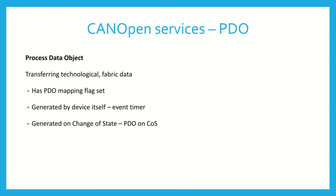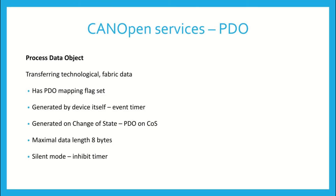It is better to use a change of state flag because it doesn't overload the bus as much. One PDO object has a maximum length of 8 bytes. Another feature of the PDO service is the availability of an inhibit timer. This specifies a time interval reserved for a device not to communicate, making it possible for low priority messages to win arbitration and not be disturbed by higher priority messages.